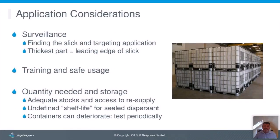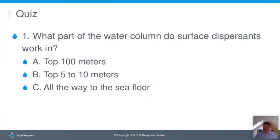Surveillance is recommended to find the thickest part of the slick, where dispersant will be most effective. A surveillance aircraft can guide the dispersant aircraft or vessel to these thicker areas. Users must be trained in safe handling and given access to safety data sheets and manufacturer-recommended PPE. Logistic planning for ongoing dispersant supply needs to be addressed early. The most common cause of spoiled dispersants is deterioration of containers due to heat, moisture and UV. Stocks should be stored away from extremes of heat and sunlight and tested periodically — in the UK, that's every five years.